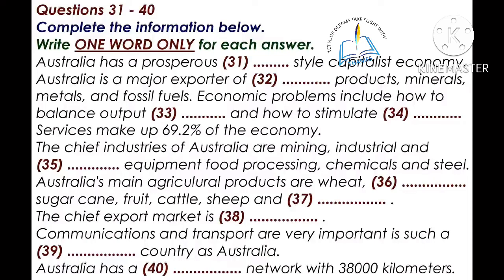Transport is naturally very important in such a big country as Australia. There are two kinds of highways: paved and unpaved. Paved highways are regular roads with a permanent surface, but actually we have more unpaved highways — around 60% — than paved, when all the country roads are included. In addition, Australia has a railway network of over 38,000 kilometres.